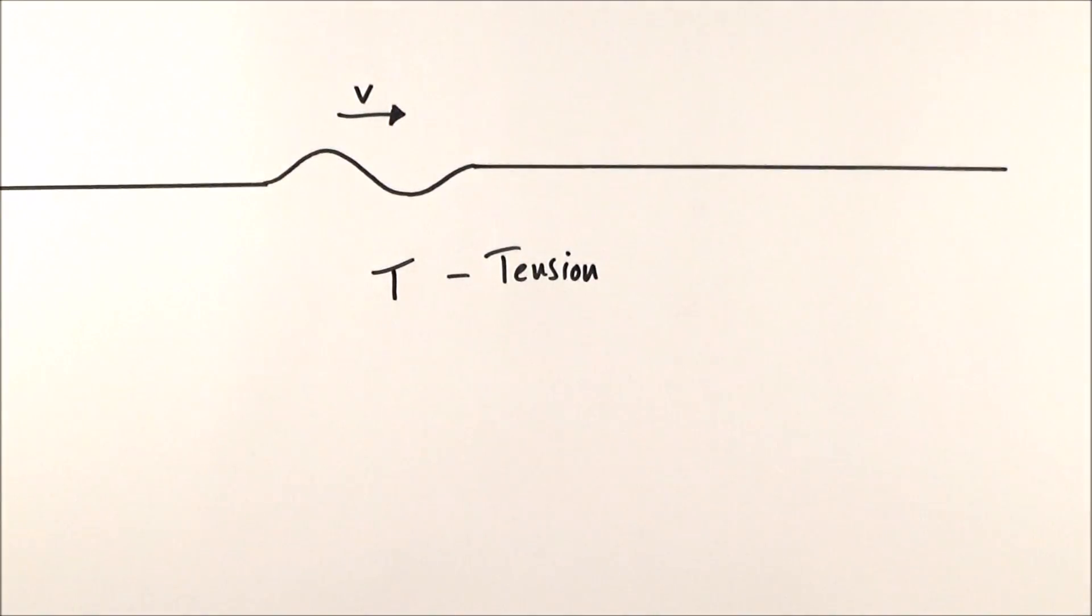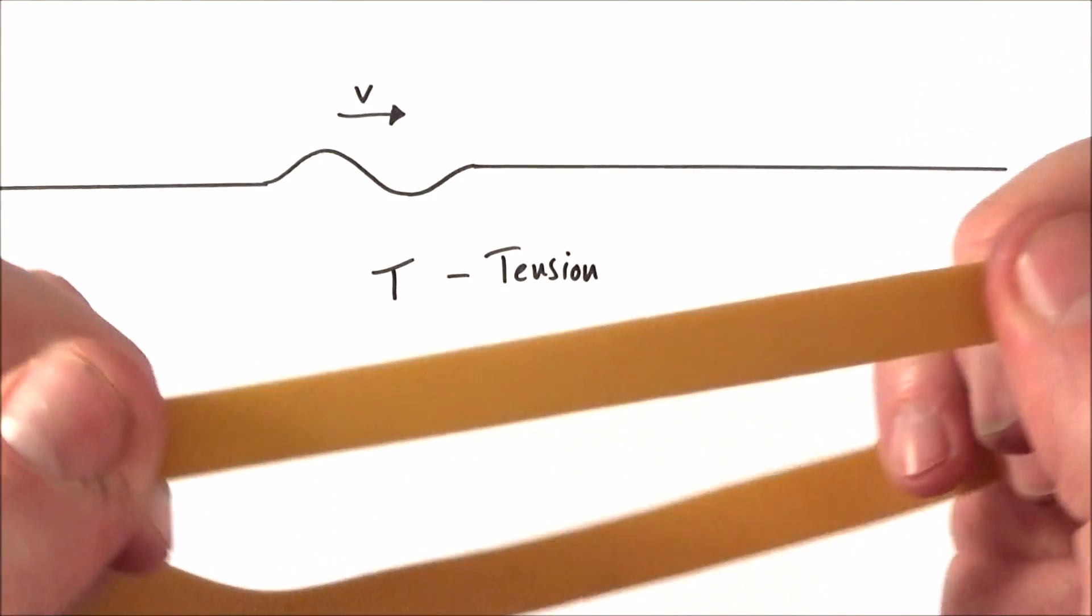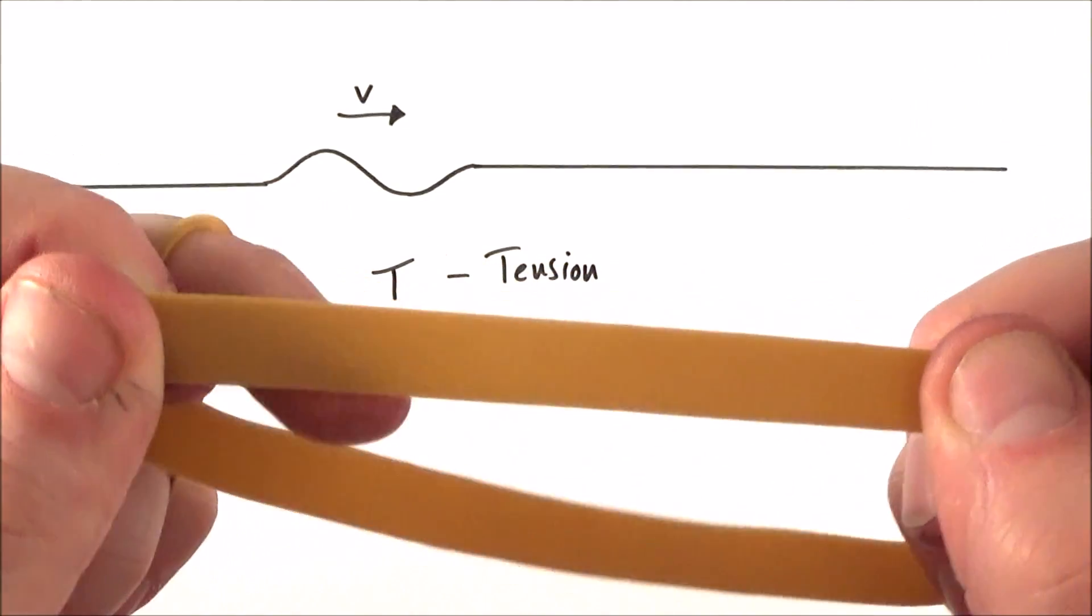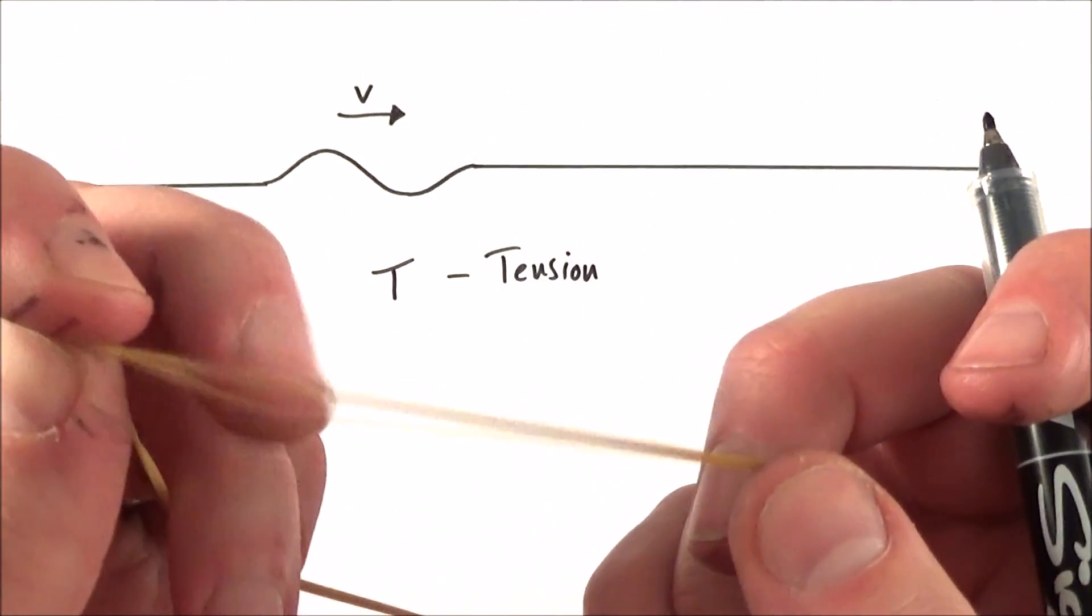The next factor is how heavy those strings are, and if we have something which is very heavy it's going to vibrate a lot slower than something which is very small and can move very quickly.